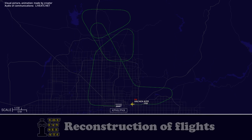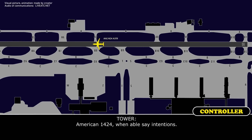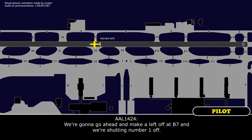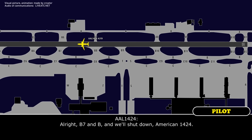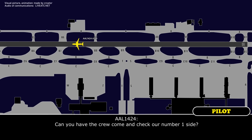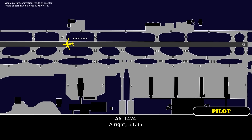1424, go ahead, copy that. American 1424, when able, say intentions. All right, we're going to make a left off of Bravo 7, then we're going to shut number 1 off. 1424, approved as requested. If you can make the left turn on Bravo then shut down — once you make the left turn on taxiway Bravo, that's fine. Bravo 7, then Bravo, then we'll shut down, American 1424. Yeah, can you have the crew come and check out our number 1 side? Can you change to emergency frequency 134.85? All right, 134.85.